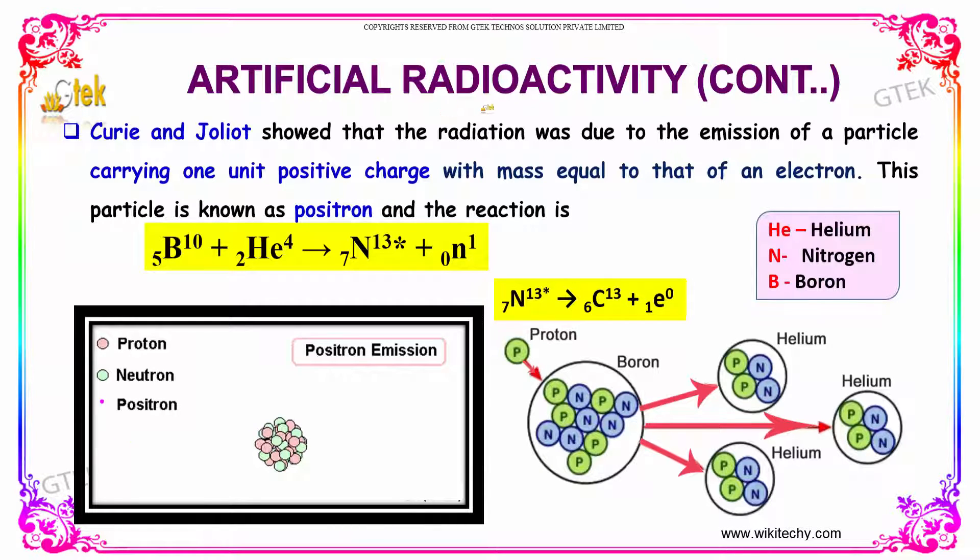Let's talk about artificial radioactivity further with the Curie and Joliot experiment. They showed that the radiation was due to the emission of a particle carrying one unit of positive charge with mass equal to that of an electron. This particle is known as a positron.